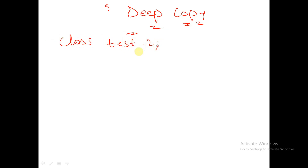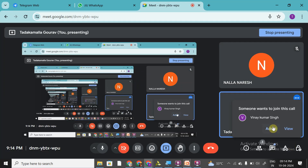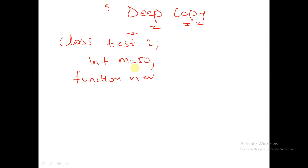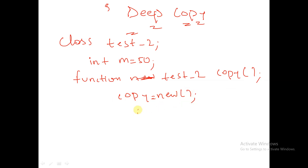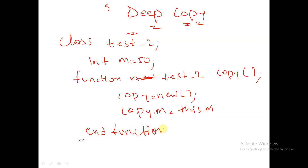Let us take a class called test_2 with a property int m = 50. I have a function called test_2_copy. In this function, copy = new and copy.m = this.m, then end the function.